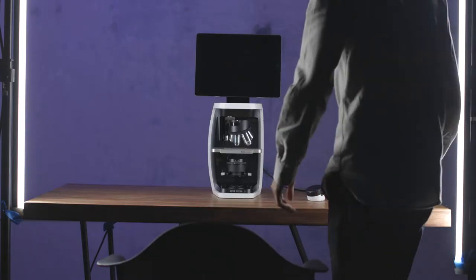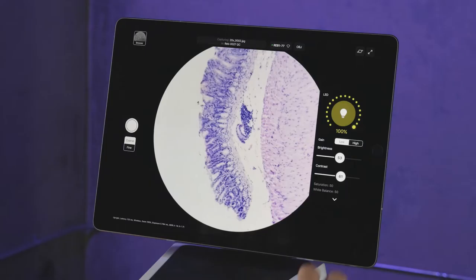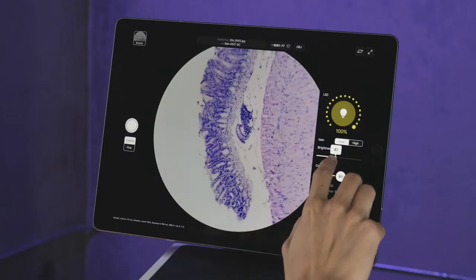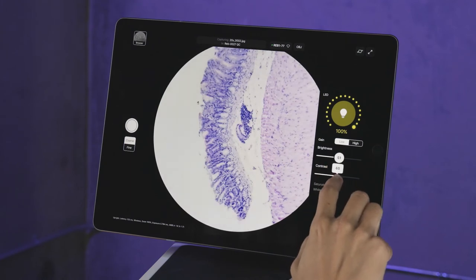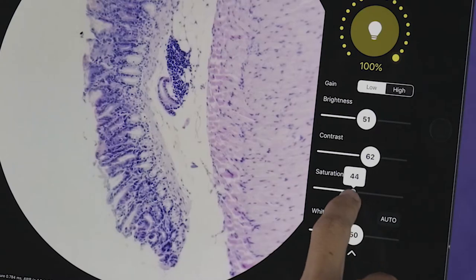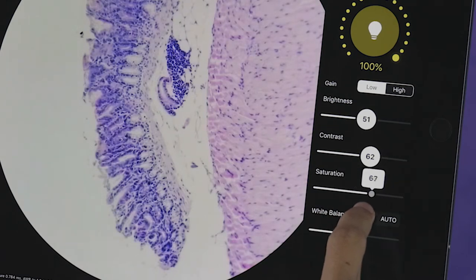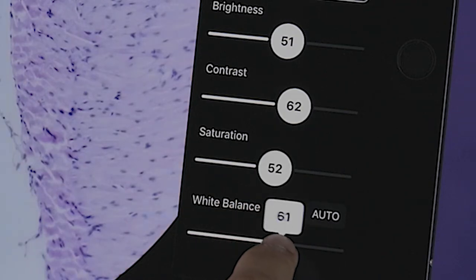Let's get started. To begin imaging, we'll first open up our app. And now you'll see a full field of view captured by an 8-megapixel CMOS color camera. REBEL's interface provides the most common adjustments on these easy-to-use sliders, such as brightness and contrast, as well as saturation and white balance.